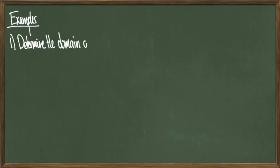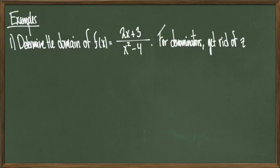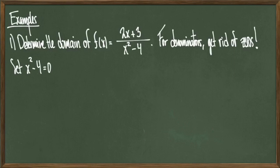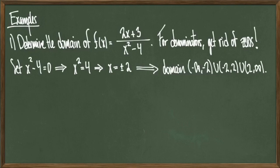Let's look at some more examples — here we're going to talk about finding the domain of rational functions. Set f of x equal to 2x plus 3 over x squared minus 4. Whenever I have x's in the denominator, the denominator is at risk of being equal to 0, which we can't allow because we can't divide by 0. So we set the denominator x squared minus 4 equal to 0. Solving, we get x squared equals 4, so x equals plus or minus 2. This means x equals negative 2 and x equals positive 2 would make the denominator zero, so we need to rule these out. Therefore the domain is all real numbers except x equals negative 2 and x equals positive 2.